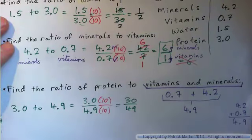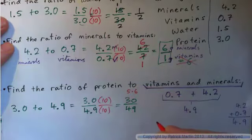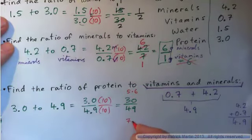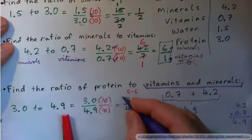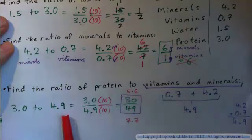Well, 30 is 5 times 6. 49 is 7 times 7. So these guys don't have common factors, do they? So it's already in lowest terms. That's your answer.